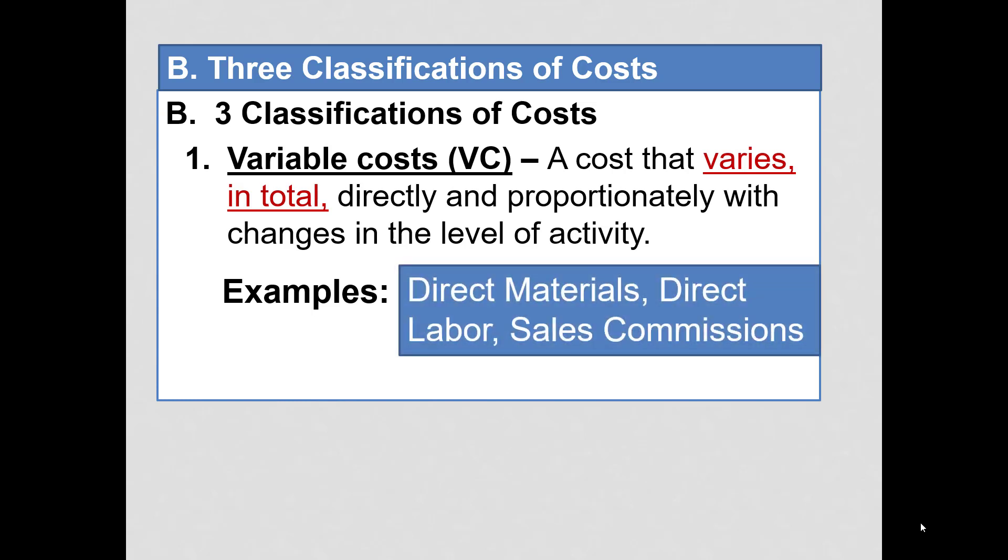Examples, direct material would increase 10% if we produce 10% more units. Likewise, direct labor costs will vary directly with activity. Sales commissions.